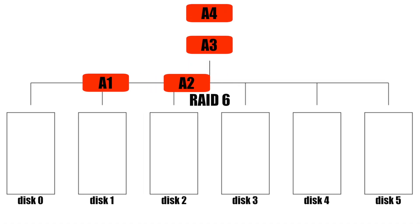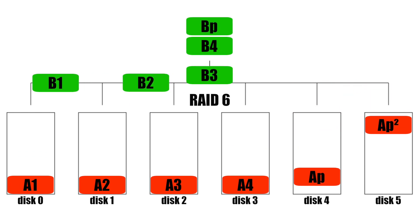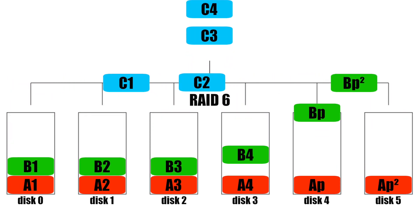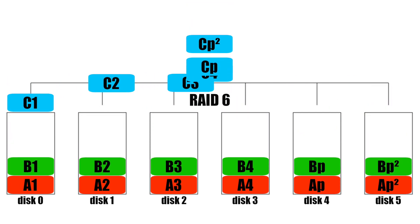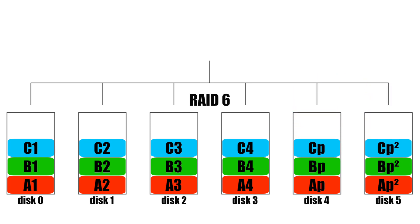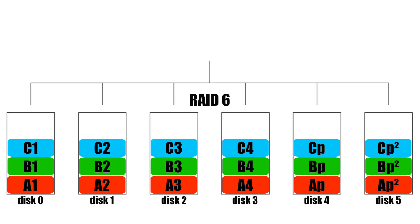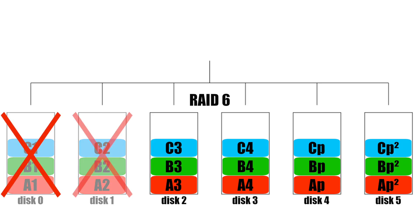Let's say you have six 4TB hard drives. RAID 5 will give you 20TB of storage space and RAID 6 will give you 16TB of storage space. With RAID 5 one drive can fail before you lose any data, and with RAID 6 two drives can fail before you lose any of your files.